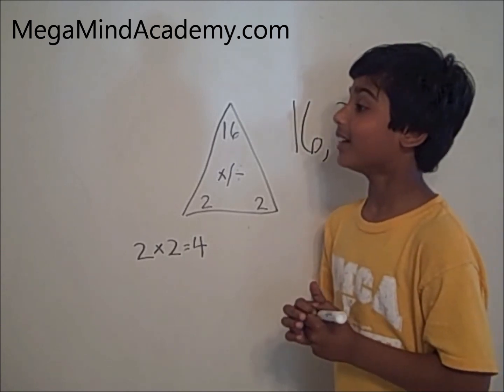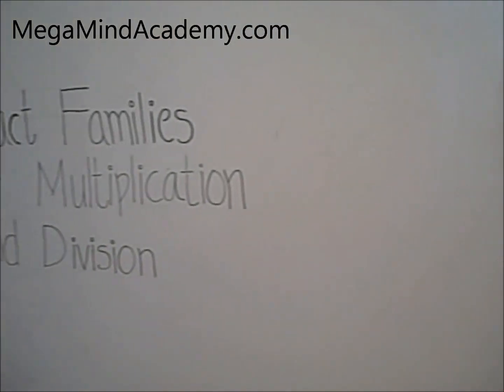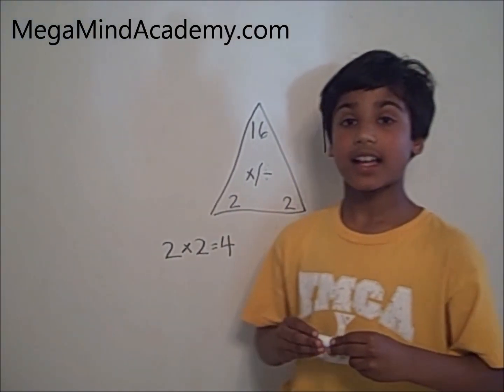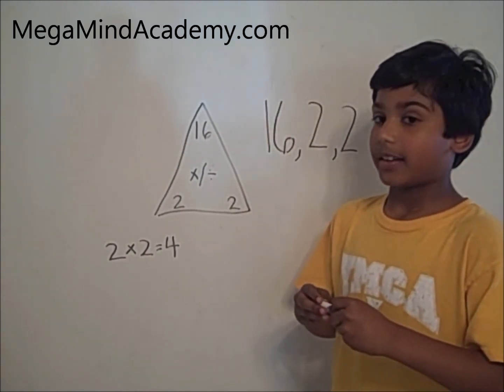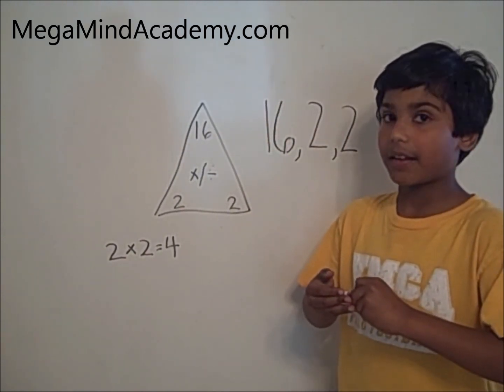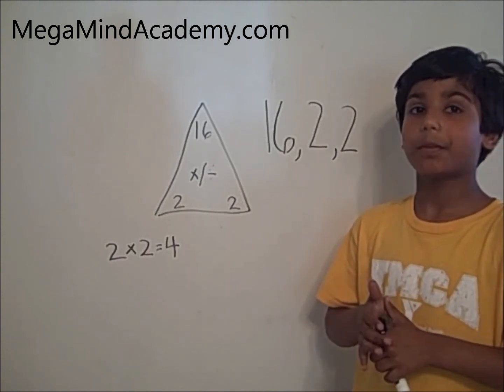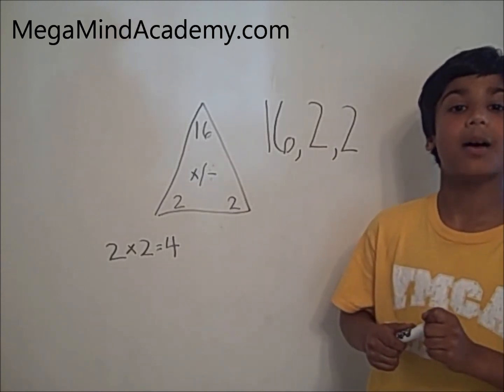Today we learned about fact families for multiplication and division. Fact families is a set of three numbers that are related to each other just like people in your families. Fact families have no random number.